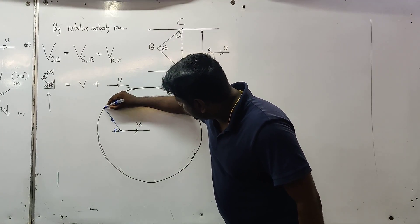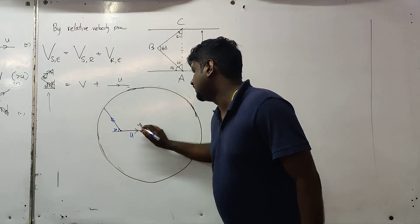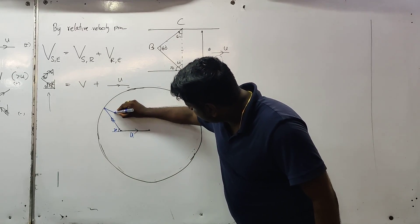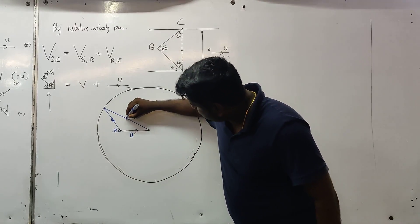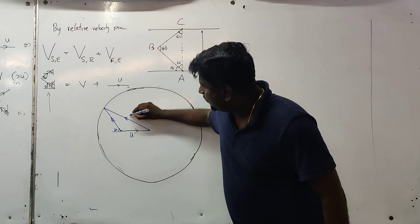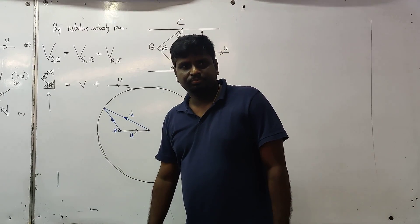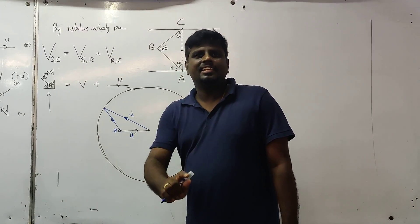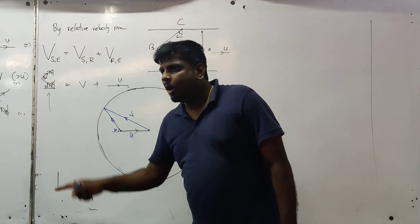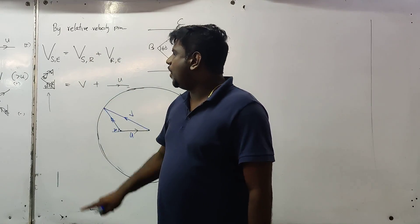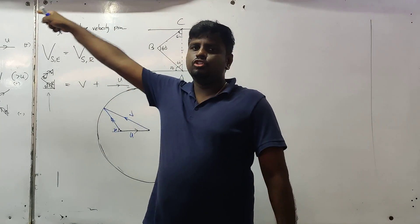Now we are going to connect this. I am going to put U down, then connect this. This is going to be the direction of B. This is the velocity triangle of the board when the board starts from A and goes to B.